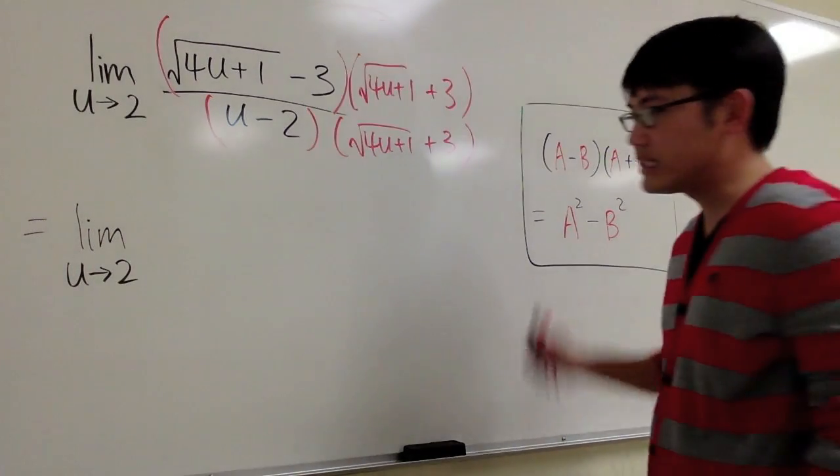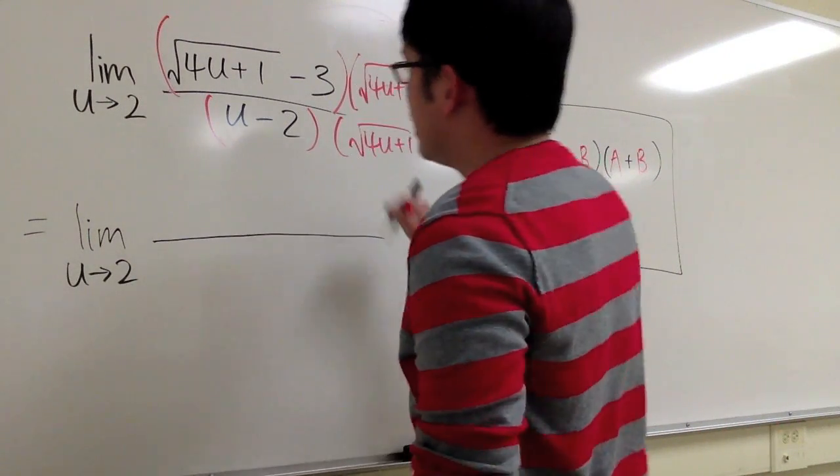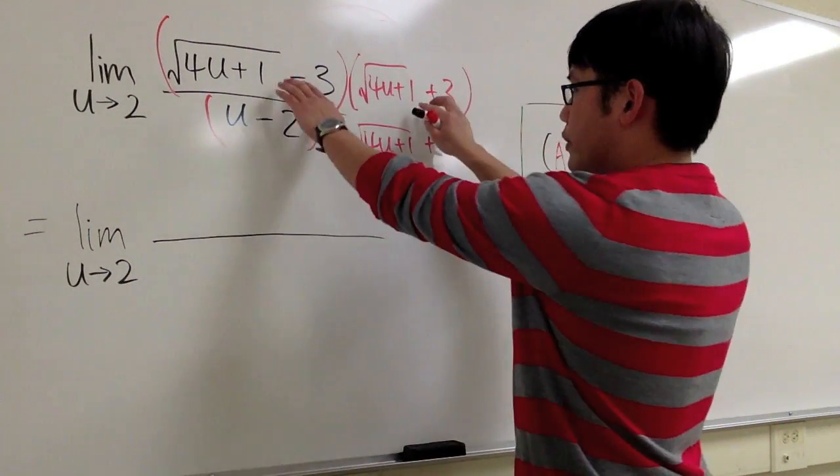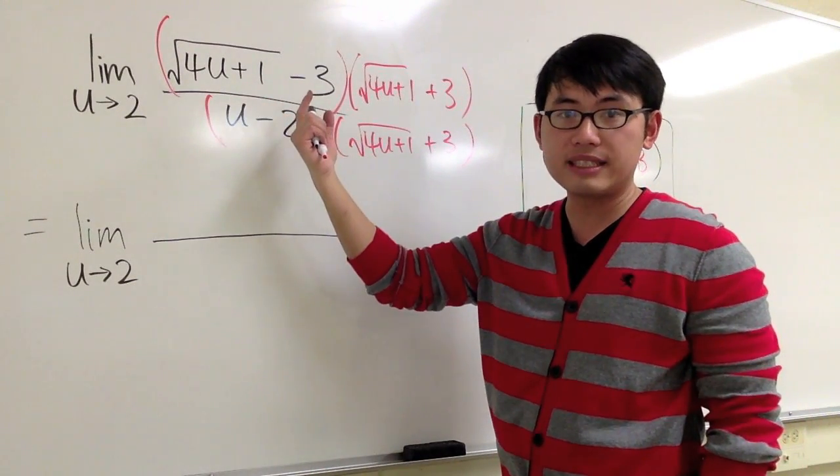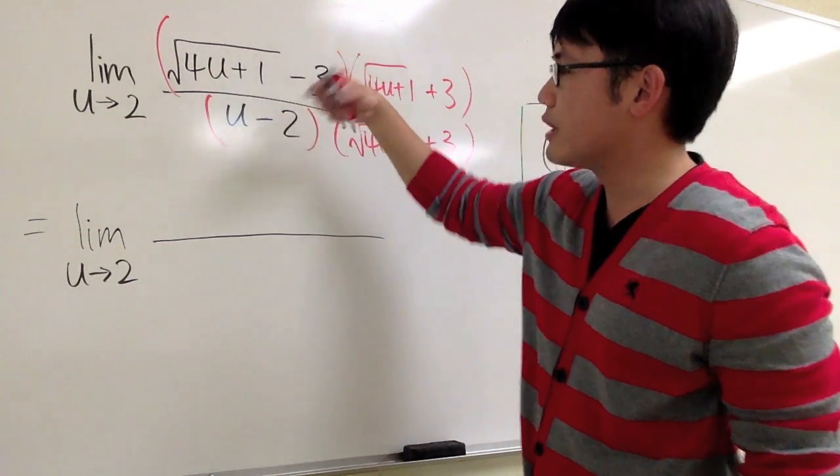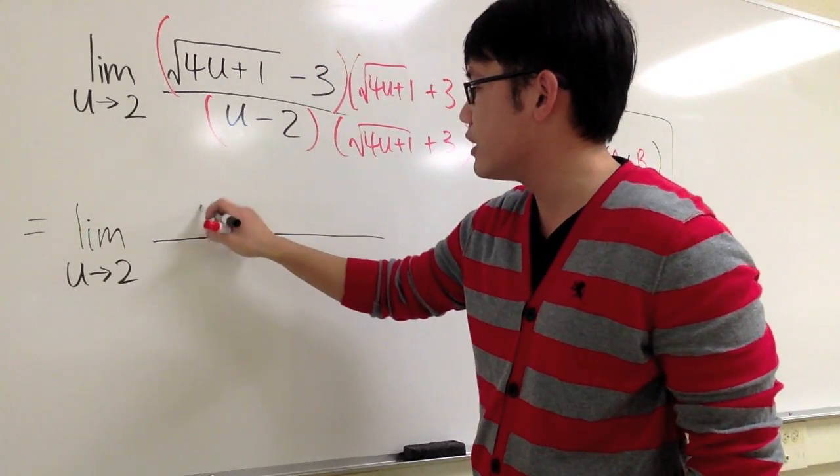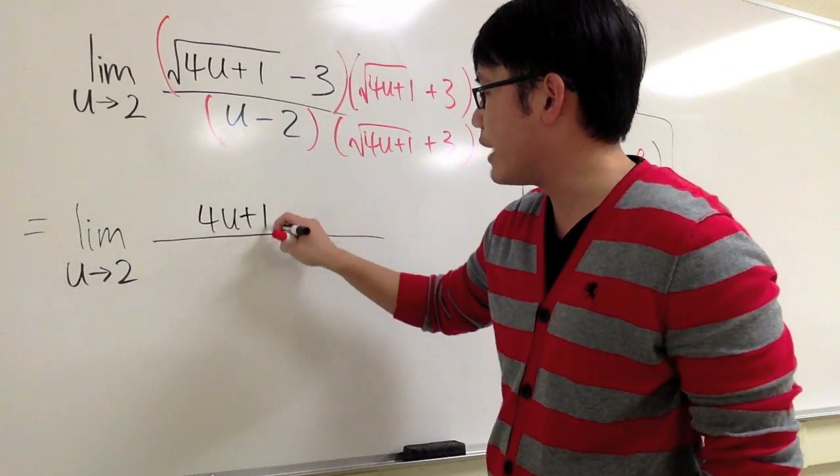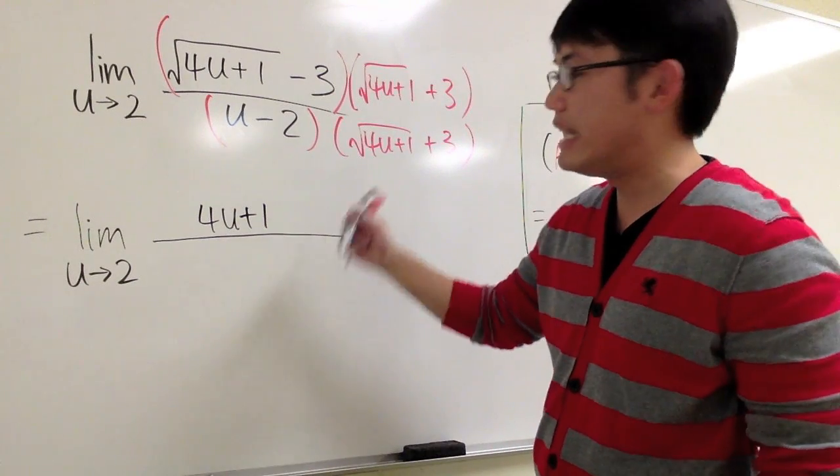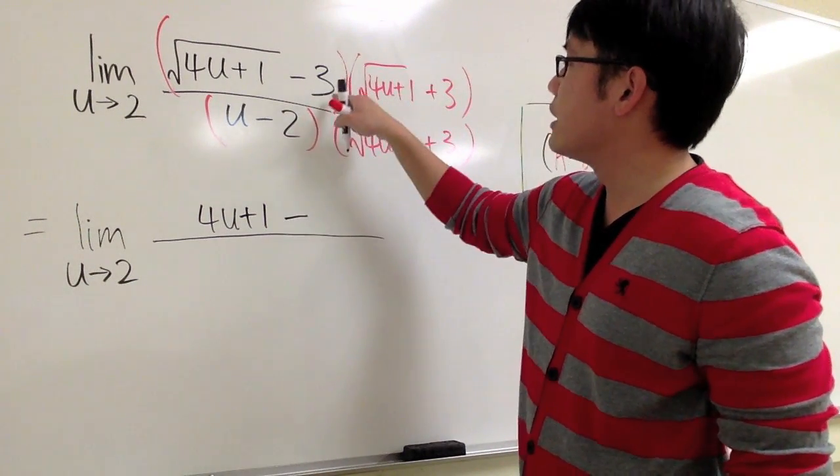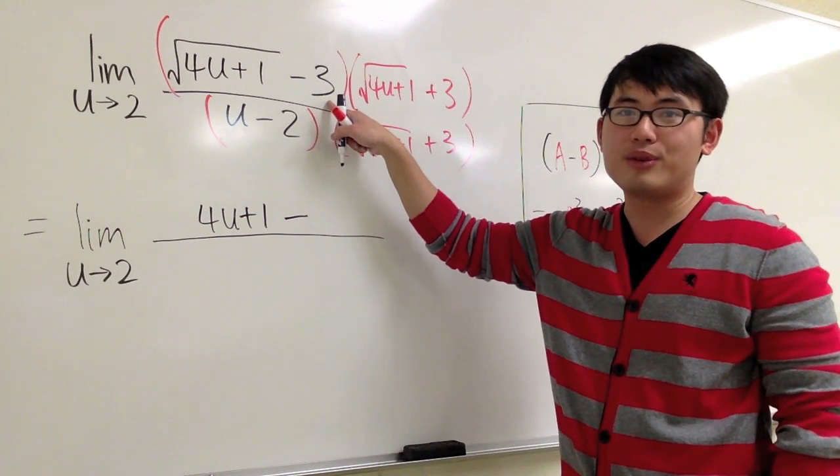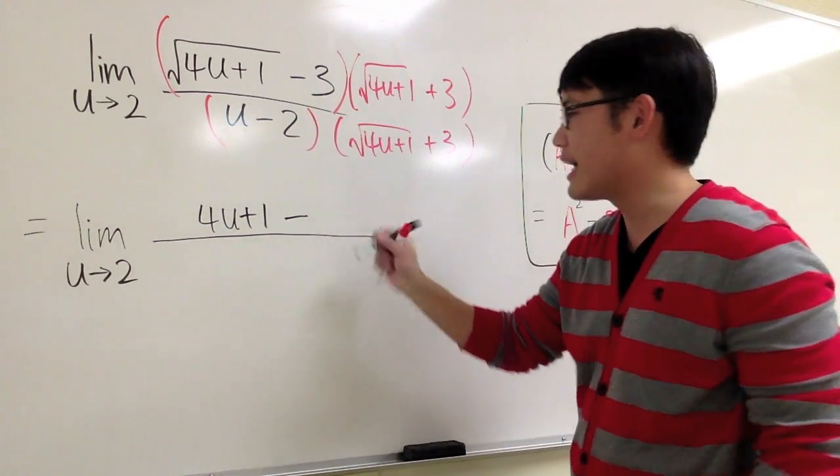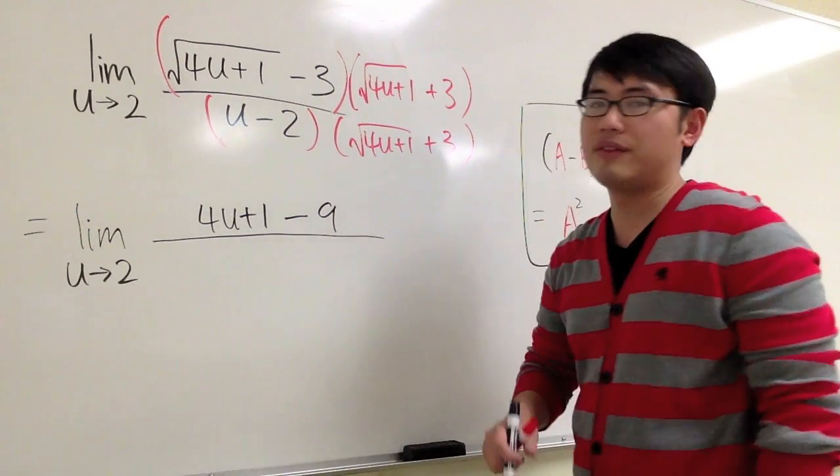In other words, on the top right here, when we multiply this out, I just need to look at the first thing and square that. The square and the square root cancel each other out, so I will just get 4u plus 1 first. And I have to subtract the second thing, which is the 3, and I don't forget to square that. So 3 squared is 9, and I'm going to have minus 9 after that.